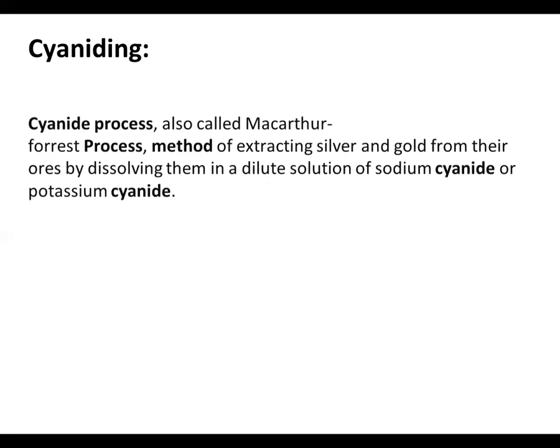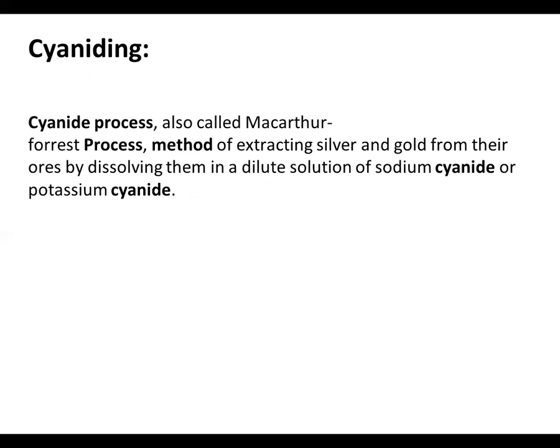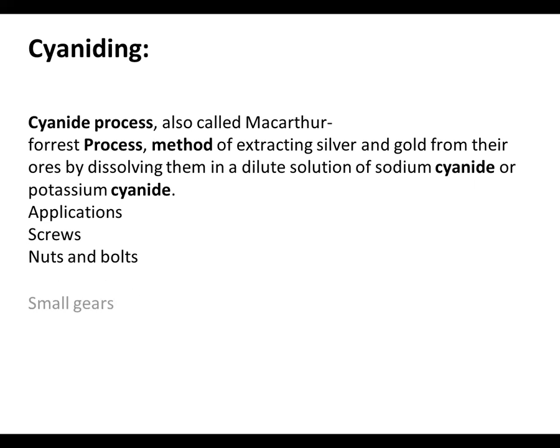Now we will see the cyanide process. What is the cyanide process? The cyanide process is also called the manufacturer process — a method for extracting silver and gold from their ores by dissolving them in a dilute solution of sodium cyanide or potassium cyanide. The applications include screws, nuts and bolts, and small gears.